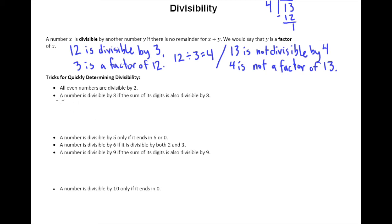A less commonly known trick but it's going to really help you out a lot to learn this is that a number is divisible by 3 if the sum of its digits is also divisible by 3. So this is kind of a weird one but here's what it's saying.